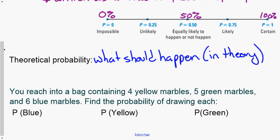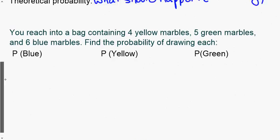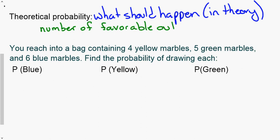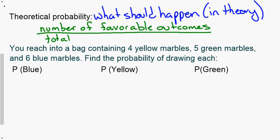For example, when flipping a coin, we should get heads or tails — one heads out of two sides. Rolling a standard die, there's one side with a one out of six sides, so the probability of getting a one is one in six. Theoretical probability is defined as the number of favorable outcomes divided by the total number of outcomes possible.